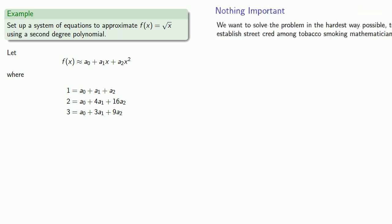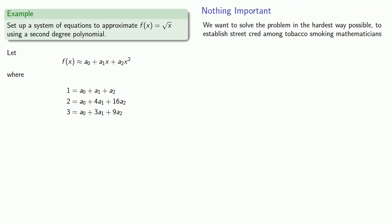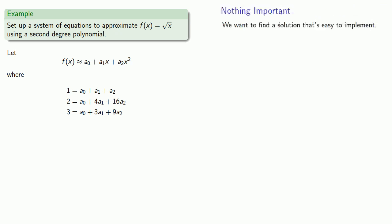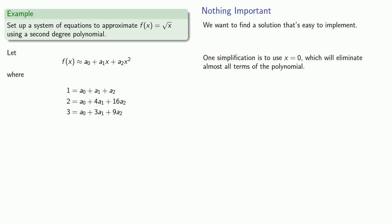While we want to solve the problem in the hardest way possible... No, no, no, no, wait, wait. We want to solve the problem in a way that's easy to implement. And one simplification is, for our values of x, we can use x = 0, which will eliminate almost all of the terms of the polynomial. So if we evaluate our function at 0 and our polynomial at 0, we get a much simpler equation.